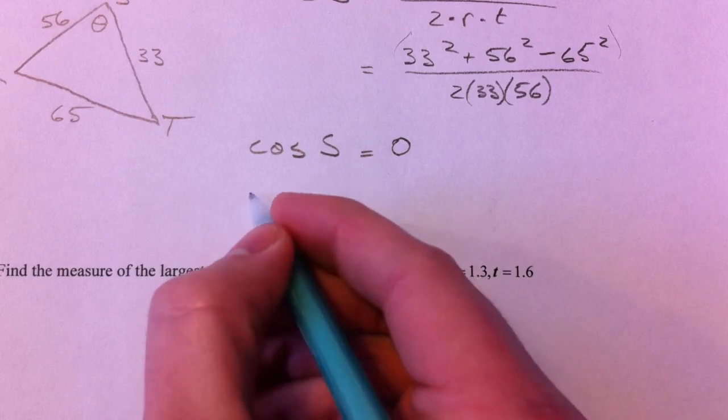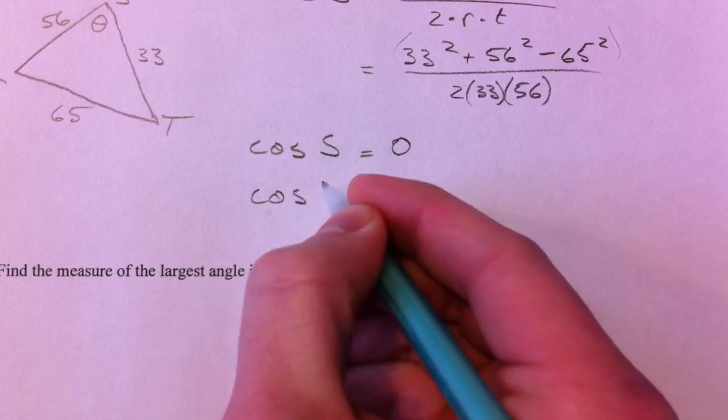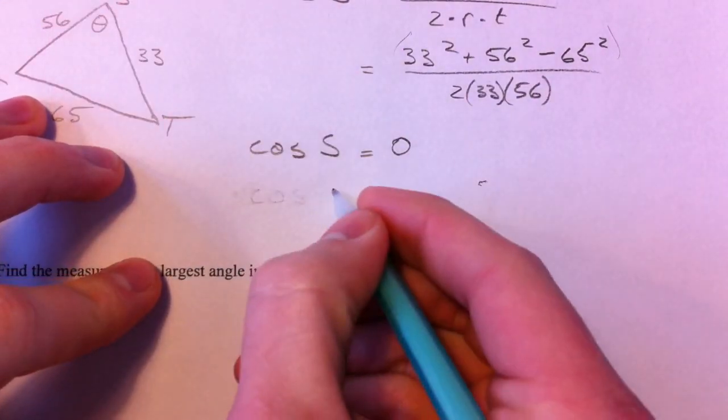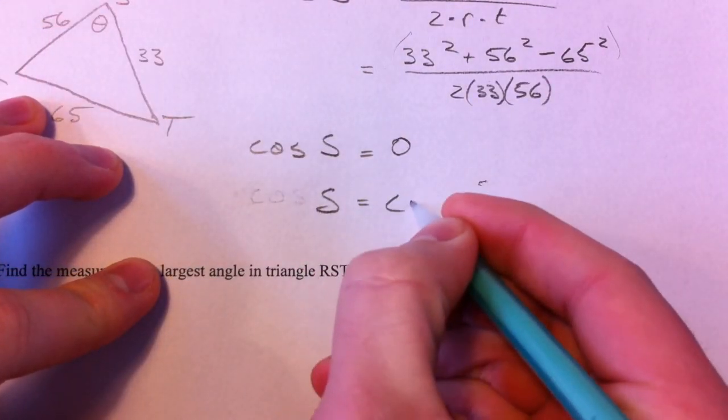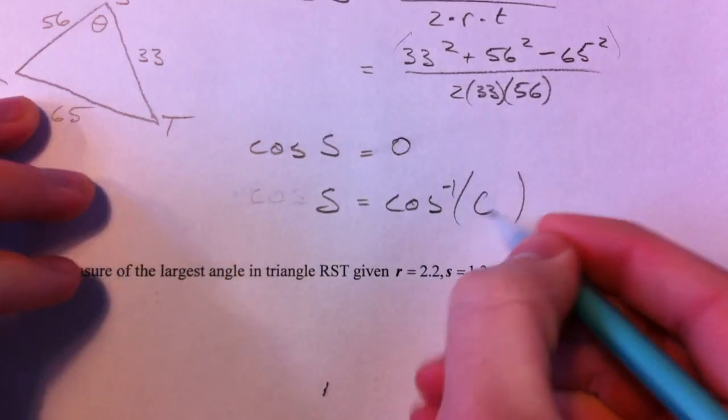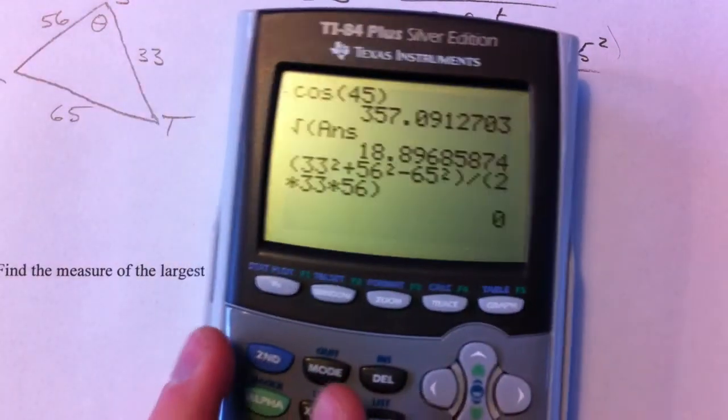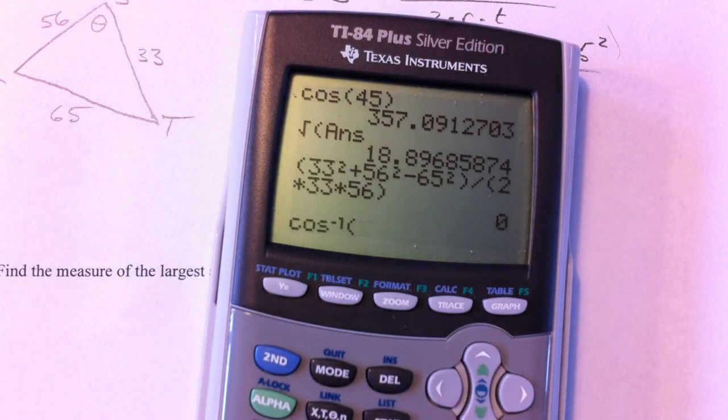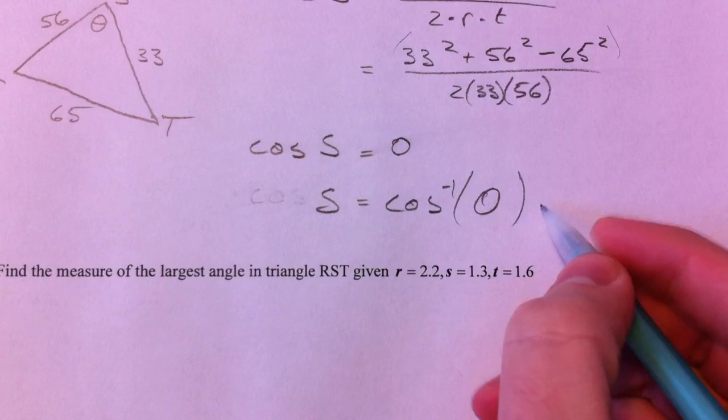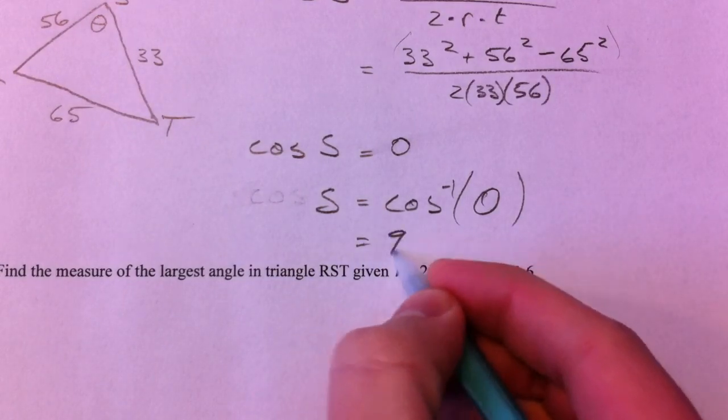the cosine—if you take the inverse cosine now of zero, where's the cosine value equal to zero? At 90 degrees. And so we had ourselves a 90 degree angle.